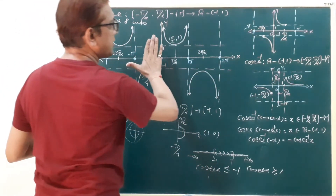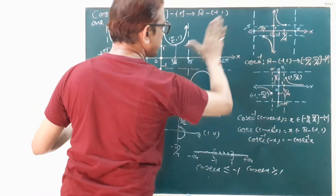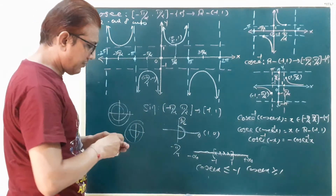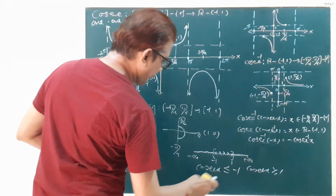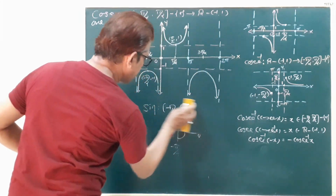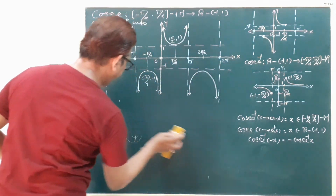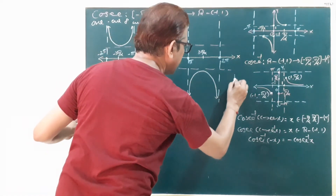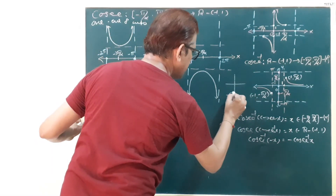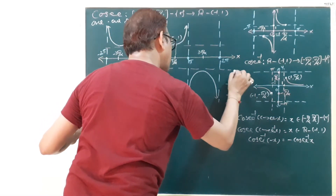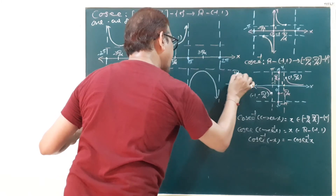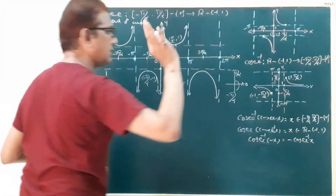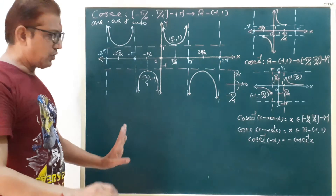So this is your cosecant function graph, and this is your cosecant inverse graph. Here again we draw the circle: minus pi by 2, 0, and pi by 2 — but this point 0 is cancelled.